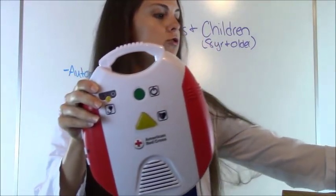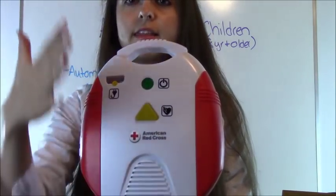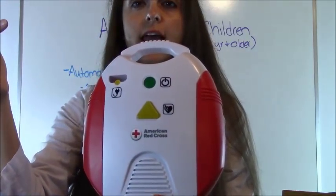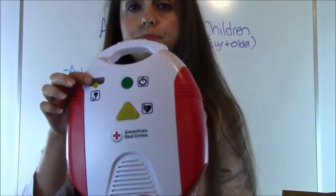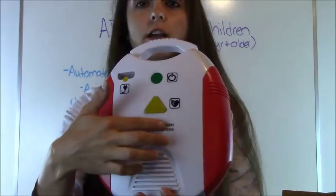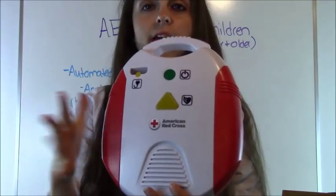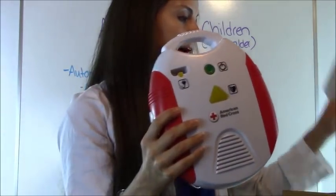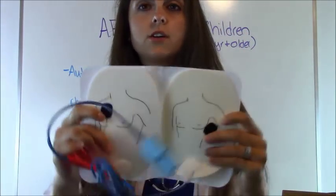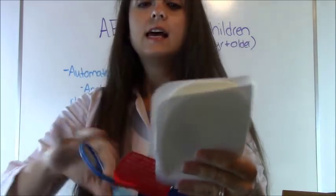The AED looks like this — they do look different, this is just one type. The green button is your on button. They are very simple to use; it tells you everything to do. You turn it on, it tells you to connect the pads, then it says 'analyzing,' and when it's ready to shock you hit the yellow button — after clearing the patient. You have different sets of pads; on adults and children eight and older you use adult pads, and the pads show you exactly where they go.